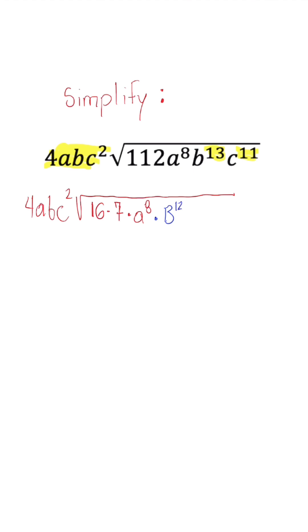So I have b to the 12th, highest even exponent, times that last b that will give us b to the 13th. And the same thing with c to the 11th. We have c to the 10th times c, which will then give us c to the 11th.